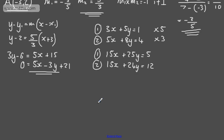I'm going to subtract downwards, so I'll do 1 minus 2. That's going to cancel the x's. I'm going to have y will equal -7.